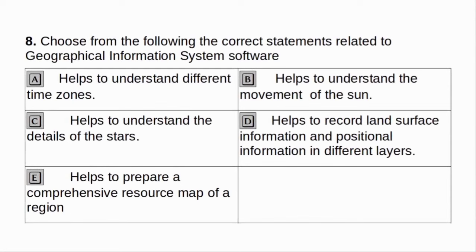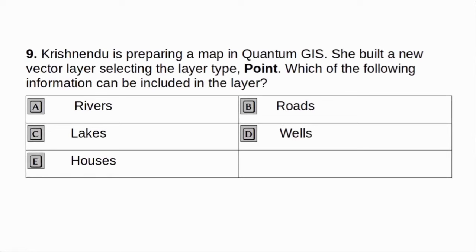Choose from the following the correct statement related to geographical information system software. A. Helps to understand different time zones. B. Helps to understand the movement of the sun. C. Helps to understand the details of the star. D. Helps to record land surface information and positional information in different layers. E. Helps to prepare a comprehensive resource map of a region. Answer: D and E.